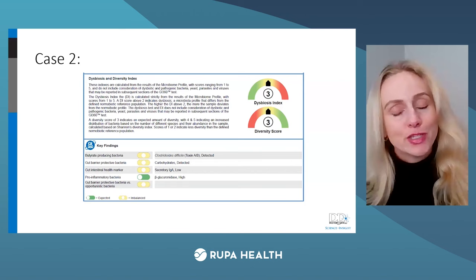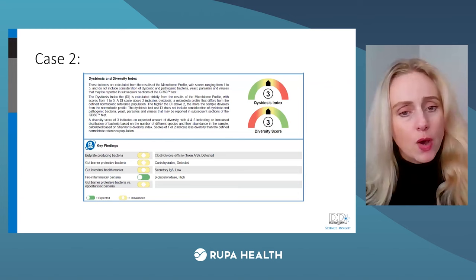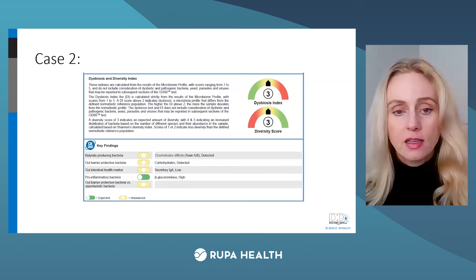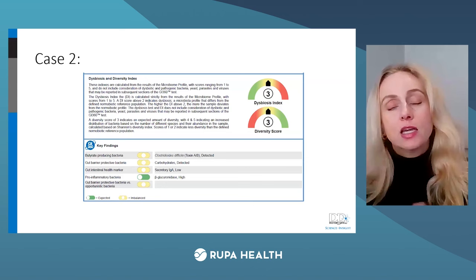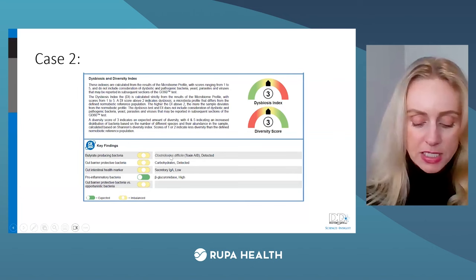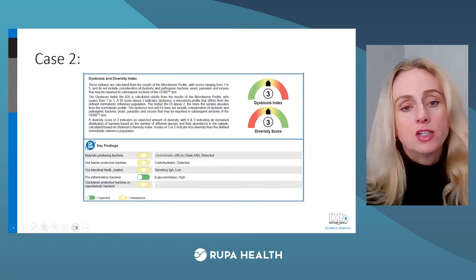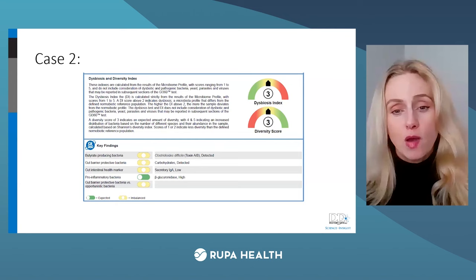The gut barrier intestinal health marker is too low, so I would think about supporting that. Pro-inflammatory bacteria are within range — this is not the same condition we saw previously. The balance between gut barrier protective versus opportunistic is too low. When gut barrier protective bacteria get too low, that can precede intestinal permeability. With the key finding of carbohydrates in the colon, that is also a sign of intestinal permeability, so I would consider supporting mucosal barrier integrity and investigating intestinal permeability.